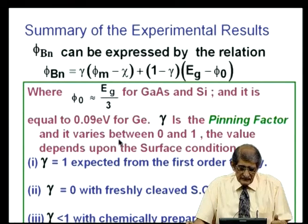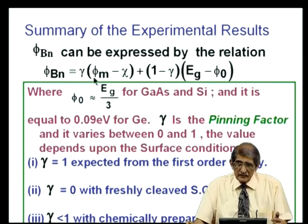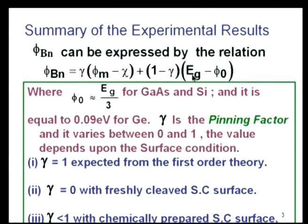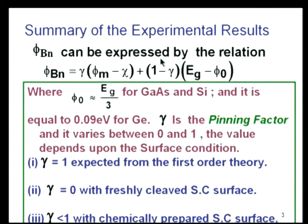Gamma is called the pinning factor and varies between 0 and 1; its value depends upon surface condition. When gamma equals 1, from first-order theory φBN equals φm minus χ — that is ideal. When gamma equals 0, as with freshly cleaved surfaces, φBN is independent of φm. You can correlate this: on freshly cleaved surfaces the interface state density is very high. The entire deviation from ideality is due to the presence of surface states not accounted for in ideal theory. When gamma is between 0 and 1, that is a chemically prepared surface.